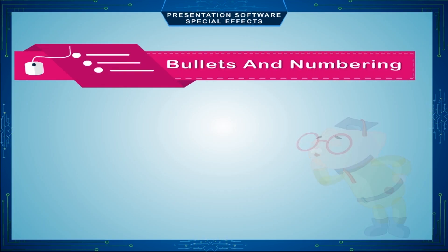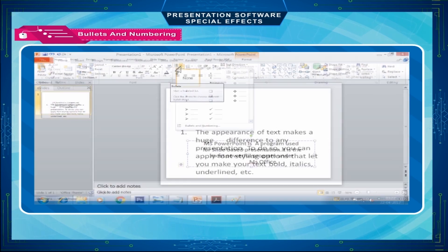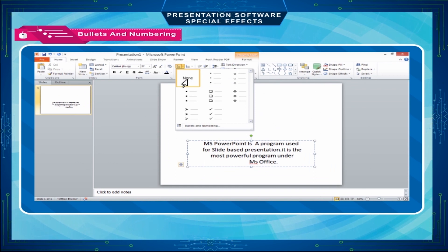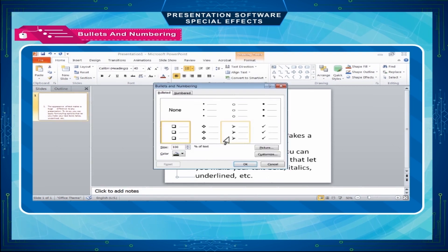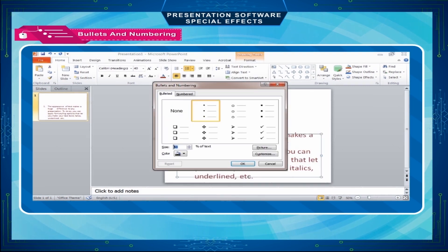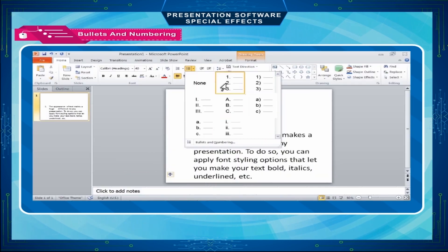Bullets and Numbering. The Bullets option helps to select a symbol used for making list items. Click on the down-pointing arrow in the bullet or numbering icon in the paragraph menu of the Home tab. You can change the style, color, and size of bullets and numbers in your Microsoft PowerPoint 2010 presentation. The Numbering option can be used to select a numbering style for creating an ordered list.